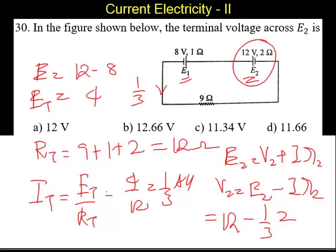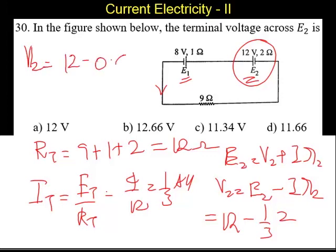12 minus 2 by 3. If we calculate, the value is going to be V2 equal to 12 minus 0.666.